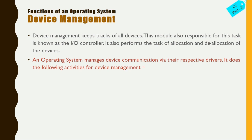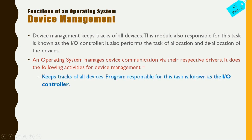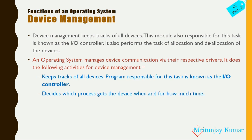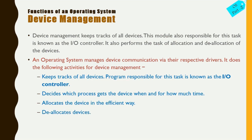The operating system does the following activities for device management: Number one, it keeps track of all devices — the program responsible is known as the I/O controller. Number two, it decides which process gets the device, when, and for how long. Number three, it allocates the device in an efficient way. Number four, it de-allocates the device when it is disabled.